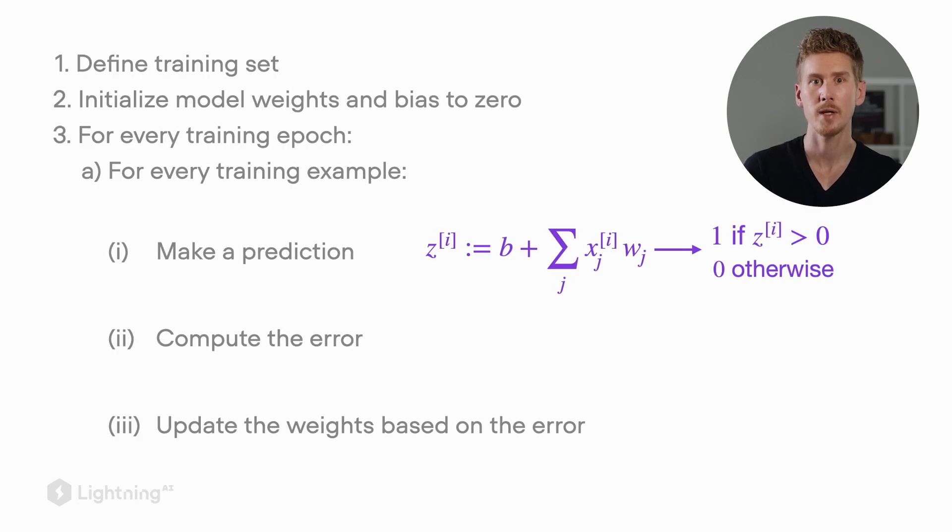Here is the computation of the prediction for training example i. We compute z, the weighted sum of the inputs and the weights, which will then go to the threshold function to determine the class label.